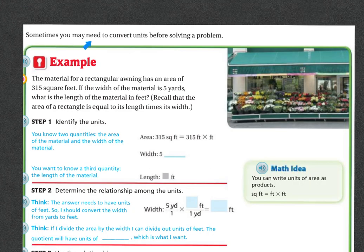Now sometimes you may need to convert units before solving a problem. Example: The material for a rectangular awning has an area of 315 square feet. If the width of the material is five yards, what is the length of the material in feet? Recall the area of a rectangle equals its length times its width.